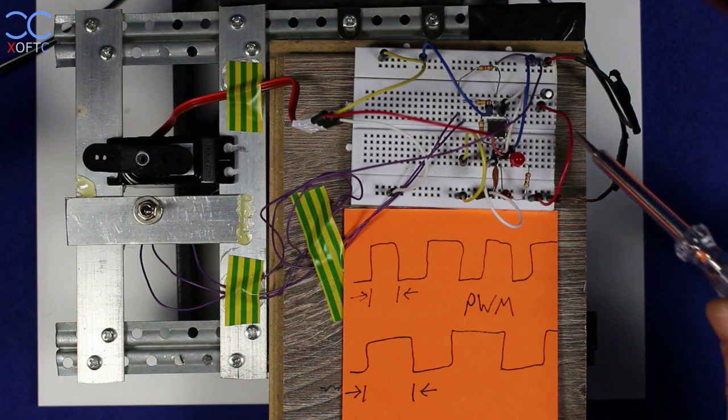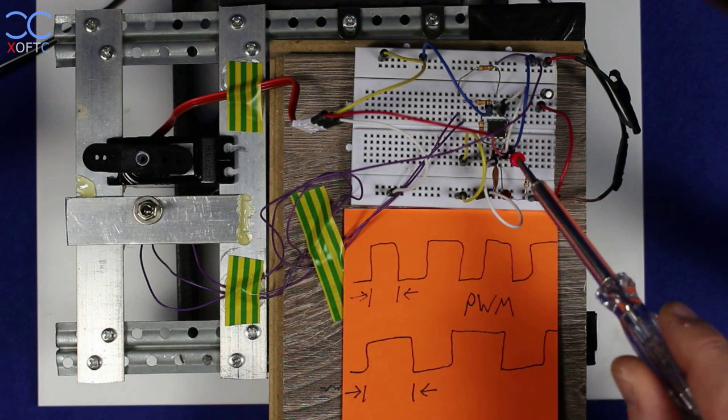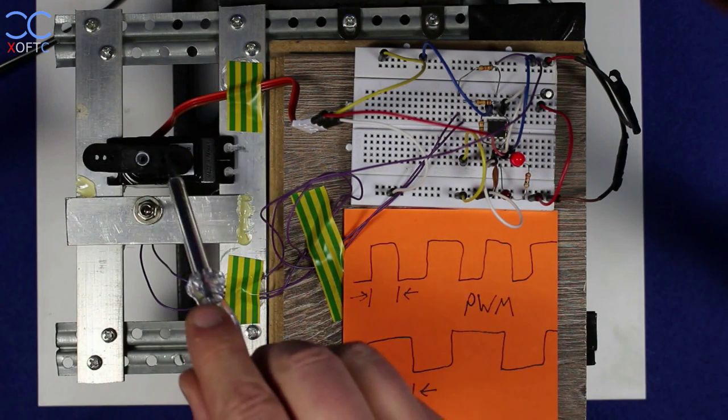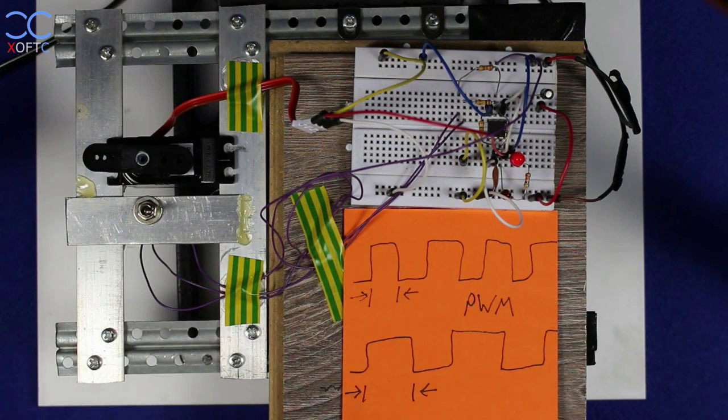Not going to make this too long, but basically we have here our 555 timer and it's generating pulses which are driven into the servo motor. It has a little circuit inside that controls it.